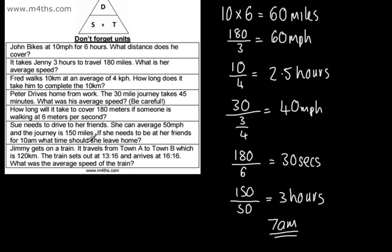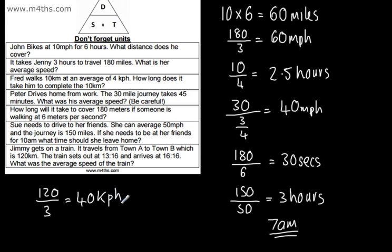Jimmy gets on a train. It travels from town A to town B, which is 120 kilometers. The train sets out at 13:16 and arrives at 16:16. What was the average speed of the train? We're looking for speed: distance divided by time. The distance is 120 kilometers. The time taken is the difference between these two values — 13:16 is 1:16 p.m. and 16:16 is 4:16 p.m., so that is 3 hours. 120 divided by 3 hours gives 40 kilometers per hour.